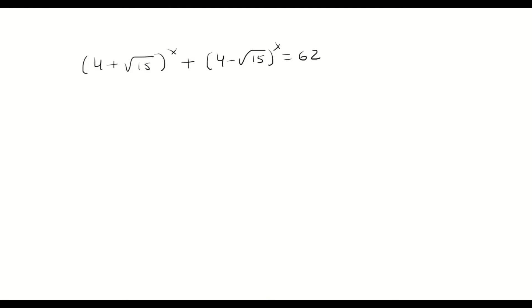Now the way to do this is to multiply both sides by (4 + √15)^x because now we're going to have (4 + √15)^(2x) plus, and then I'm going to multiply (4 - √15)^x.